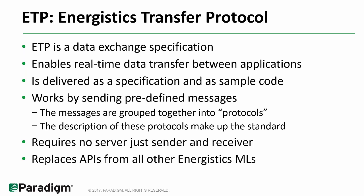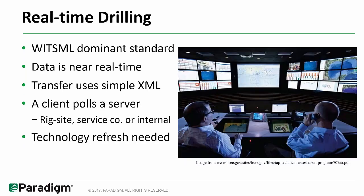From a computer science perspective, ETP works by sending what we call messages — a message is just a small statement that goes across the wire. There are roughly 50 message types in all of ETP, grouped into things we call protocols. Unlike previous transfer standards from Energistics, there's no notion of a client and a server — it's really just two running applications where one wants to produce data that a consumer would like to receive. ETP replaces the APIs of all the other Energistics standards — WitsML, ProdML — so it's now an API that spans all Energistics applications.